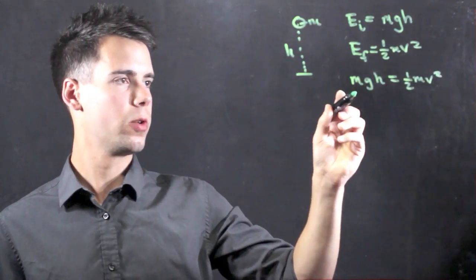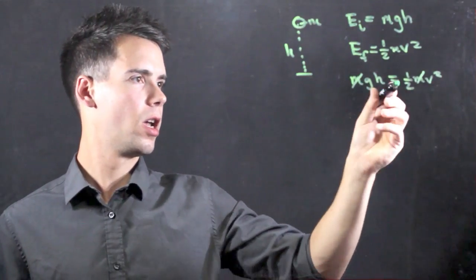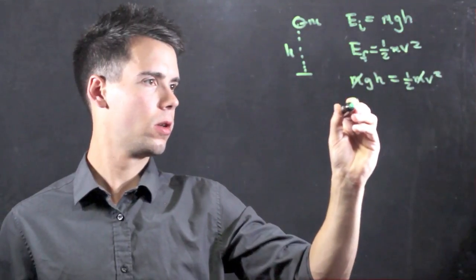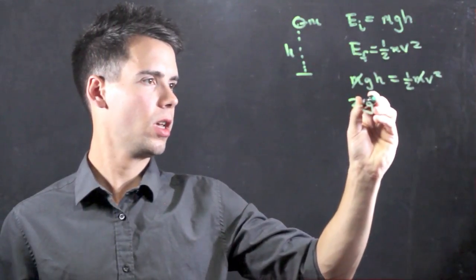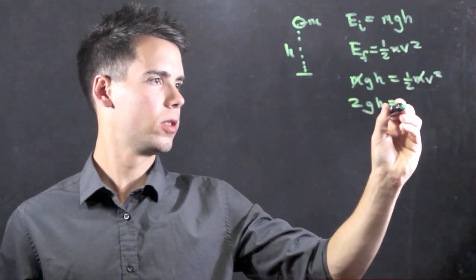Now, fortunately, we don't need the mass to find the speed because it just cancels on both sides. And if we multiply both sides by two, we find that 2gh is equal to v squared.